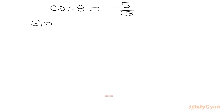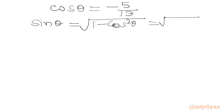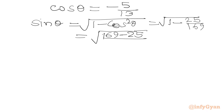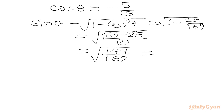Now we find sinθ using sinθ = √(1 − cos²θ) = √(1 − 25/169) = √(144/169) = 12/13. So sinθ = 12/13.